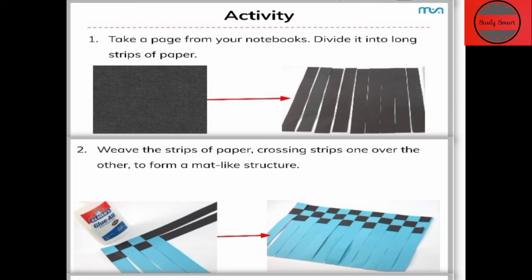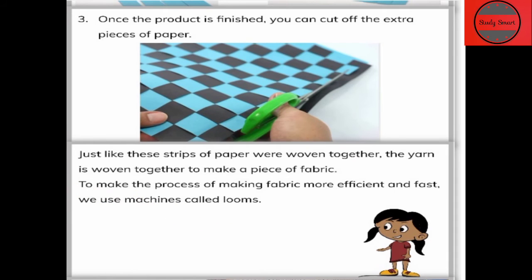Now we weave these paper strips. Just cross one strip over another and glue it so that they do not come apart. By crossing strips one over the other, we create a mat-like structure. Once completed, the remaining extra pieces are cut off, and we have the look of a mat. Now we discuss what this activity shows us about fabric.